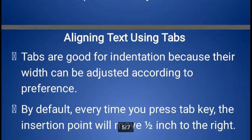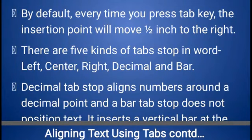Our next topic is aligning text using tabs. Tabs are good for indentation because their width can be adjusted according to preference. On the keyboard you can see the Tab key. When you press the Tab key, the cursor always jumps half an inch. Using the Tab key, we can arrange our data in tabular style — it is another way to set data besides using the Table option. By default, every time you press the Tab key, the insertion point will move half an inch to the right. In word processing applications, there are five kinds of tabs: left tab, center tab, right tab, decimal tab, and bar tab.